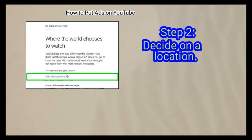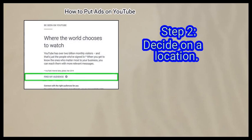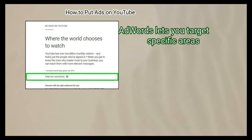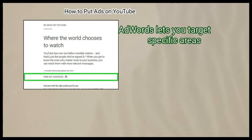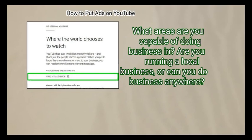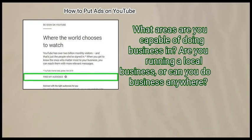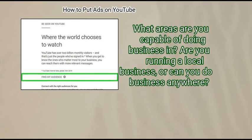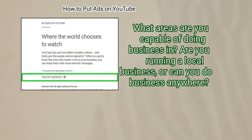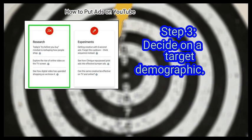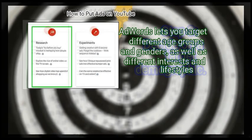Step 2: Decide on a location. AdWords lets you target specific areas. What areas are you capable of doing business in? Are you running a local business or can you do business anywhere?